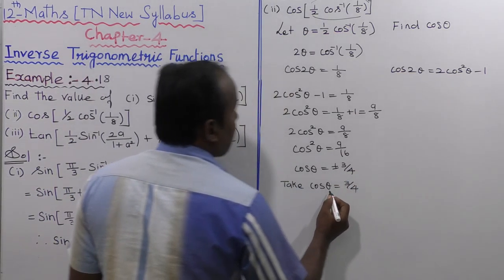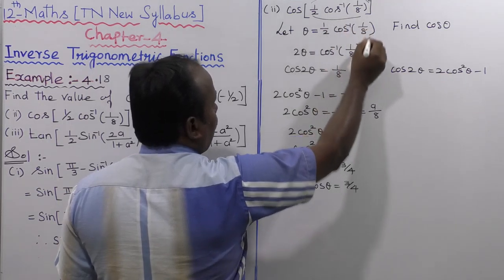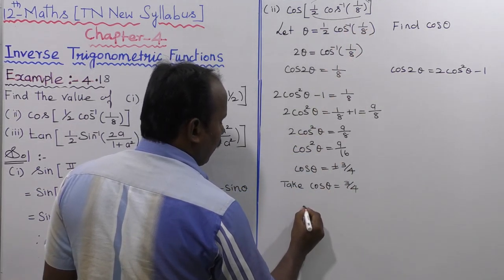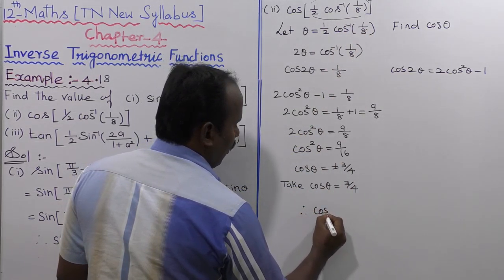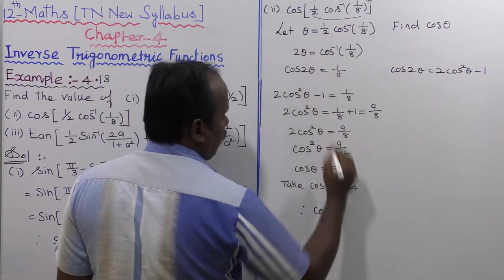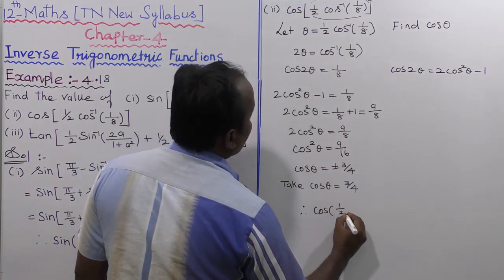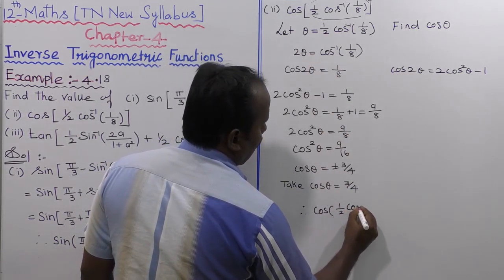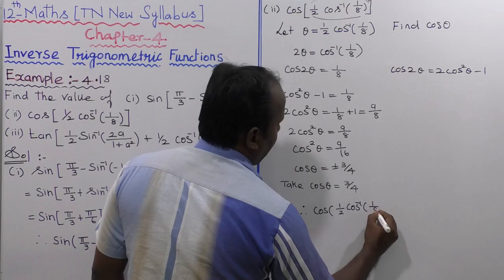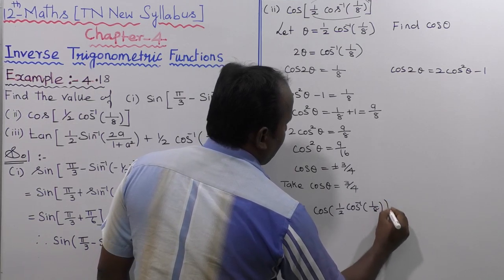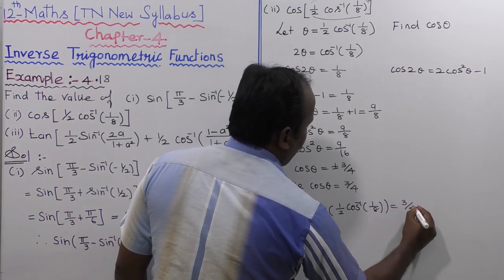Substituting back, since θ = 1/2 · cos⁻¹(1/8), we conclude that cos(1/2 · cos⁻¹(1/8)) = 3/4.